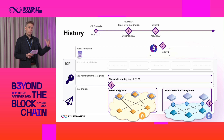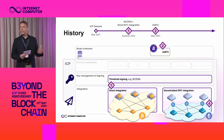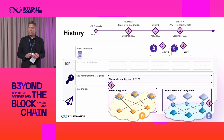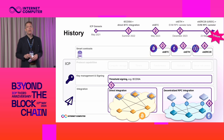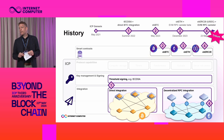That resulted in the birth of ckBTC, which is a twin of the Bitcoin token on ICP with the transaction speed and transaction cost you know from ICP. This journey continued with the launch of ckETH, a twin of the Ethereum token, which was launched in December last year.